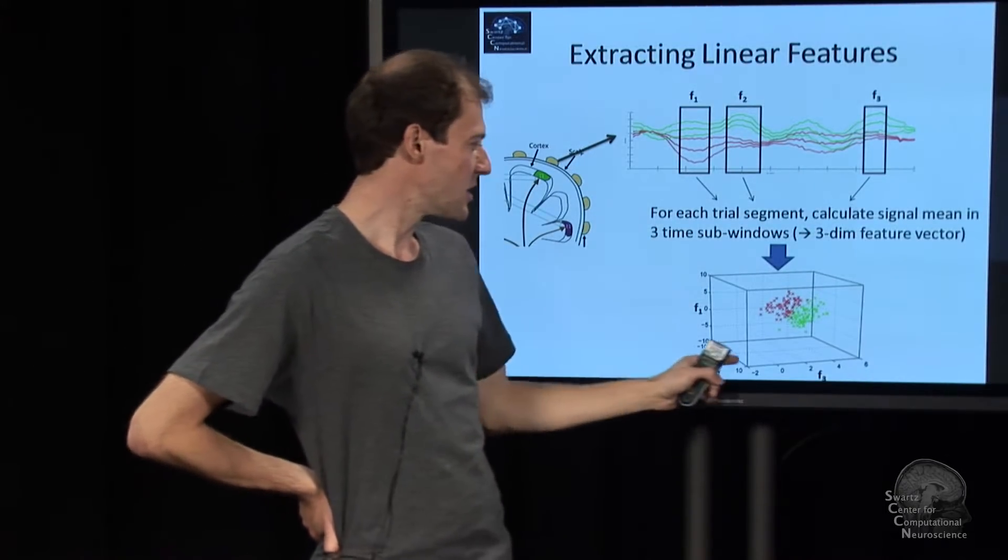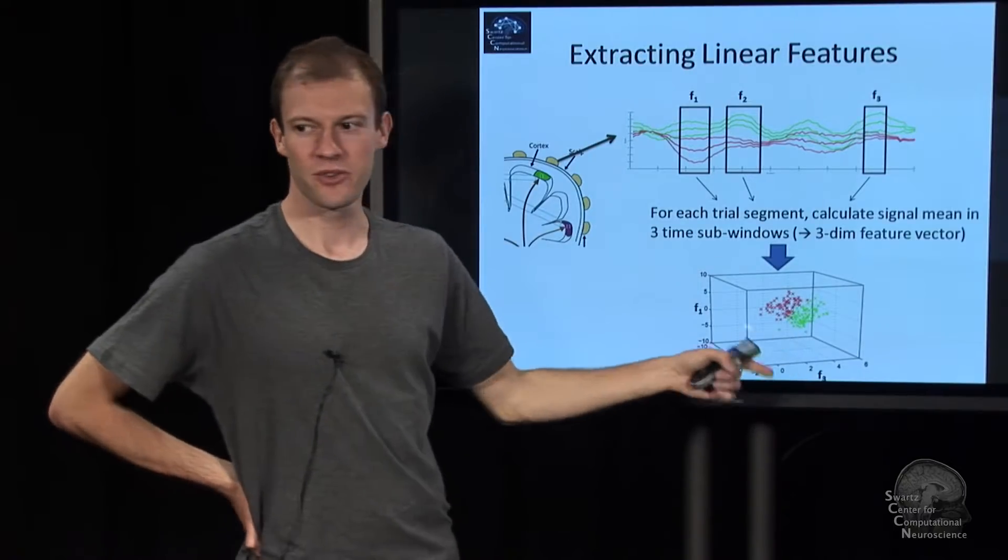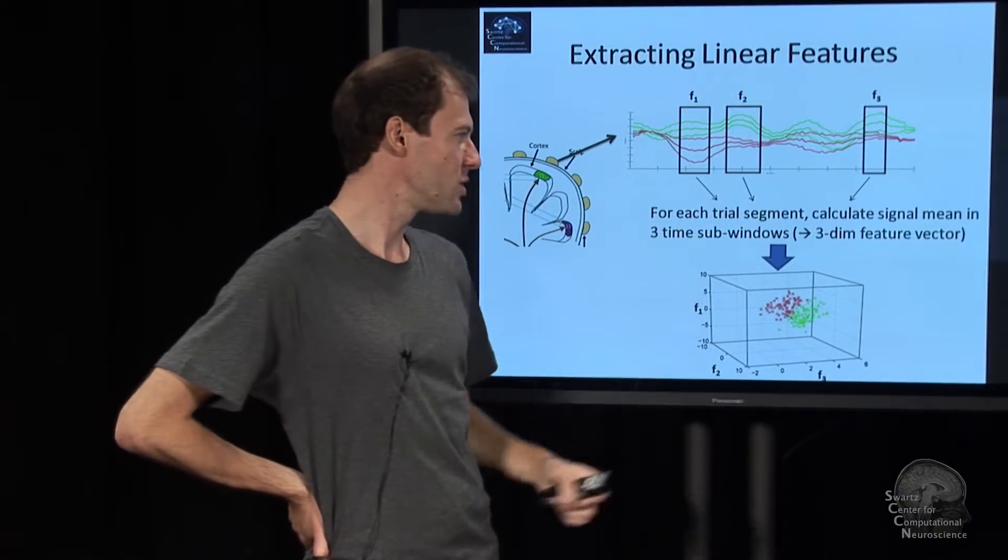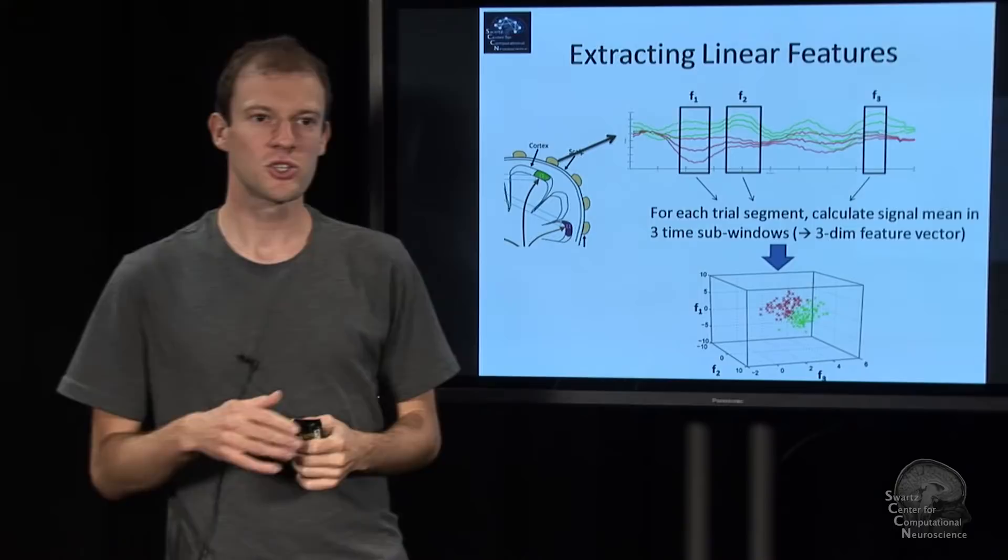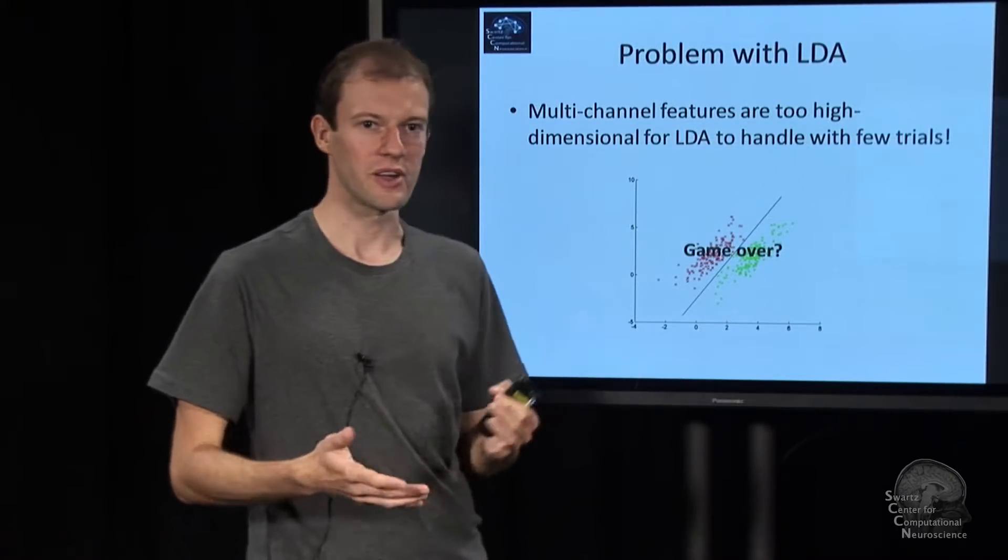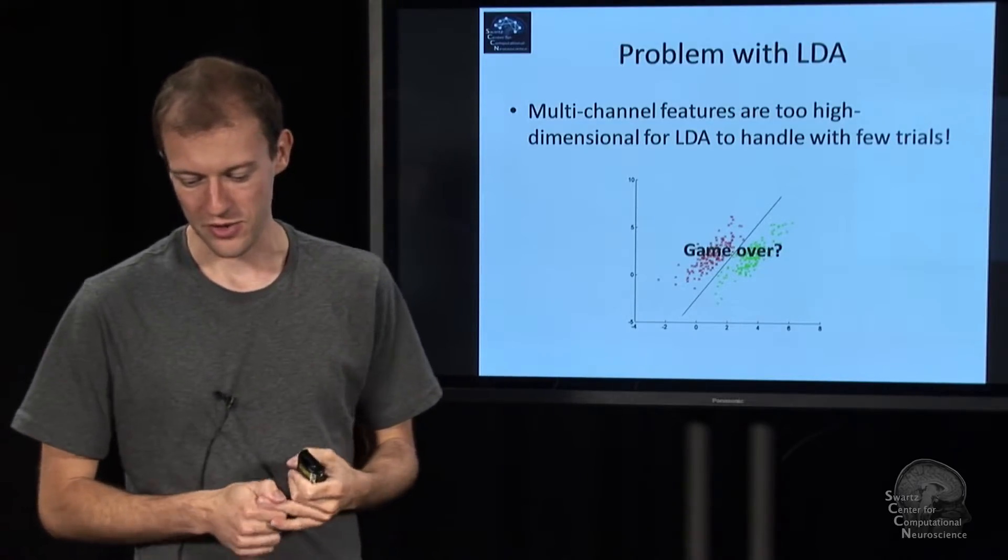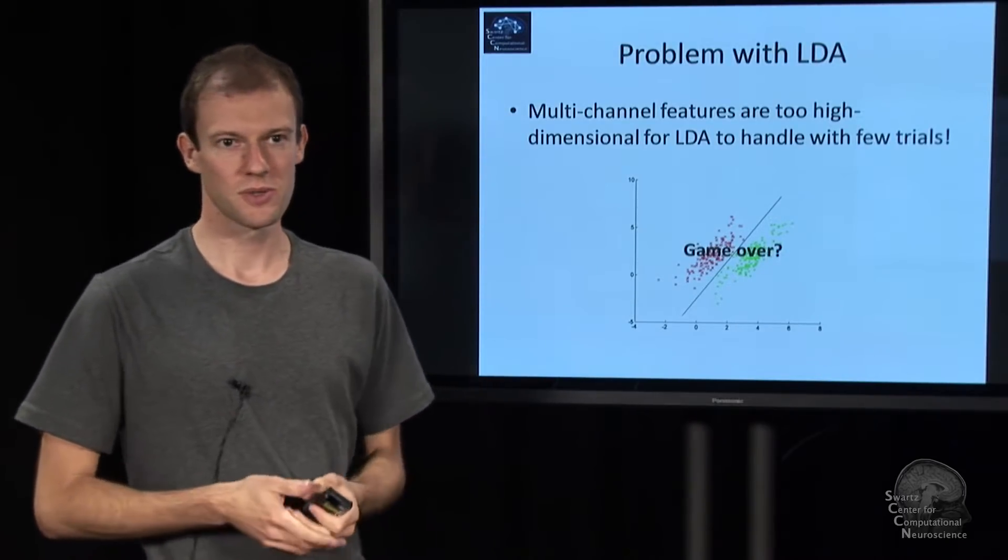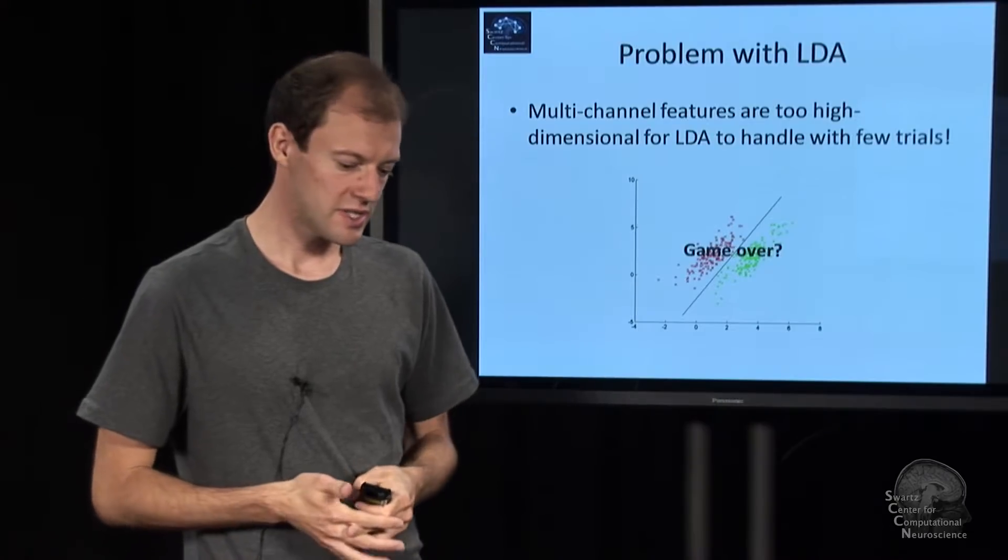If this was just one channel, we would have a 3D feature space with a distribution, except that now it's actually higher dimensional. We have number of channels times three or five, so for 100 channels you might have 500 dimensions. And as we already said, LDA has trouble dealing with 100 or 500 dimensions,